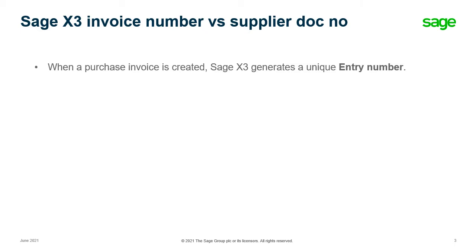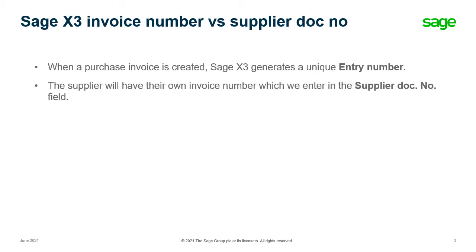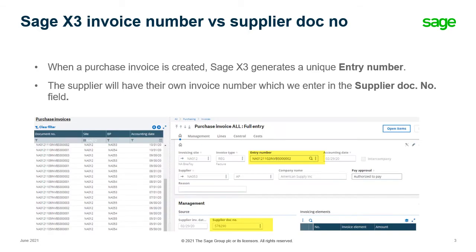When a purchase invoice is created, Sage X3 generates a unique entry number. The supplier will have their own invoice number from their system, which we enter in the supplier doc num field. You can see up at the top there's the entry number, and down at the bottom the supplier doc num.